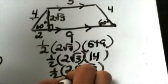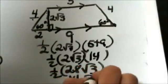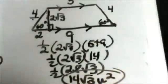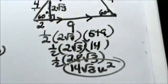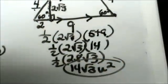Half of 28 is 14 square root of 3 units squared and that is how you would find the area of the trapezoid. I hope this video was helpful.